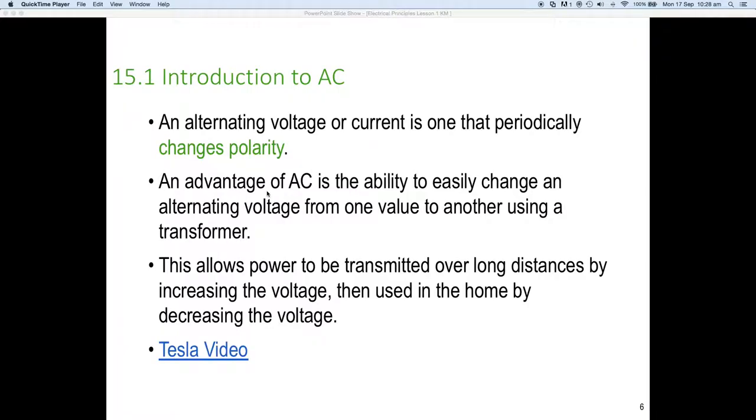Welcome to AC lesson one, part one. We've just looked at part zero, dealing with AC as a complex quantity and discovering that it has both magnitude and direction. We'll get into more of that as the slides go on. This is 15.1, an introduction to AC. In particular, an alternating voltage or current is one that periodically changes its polarity.